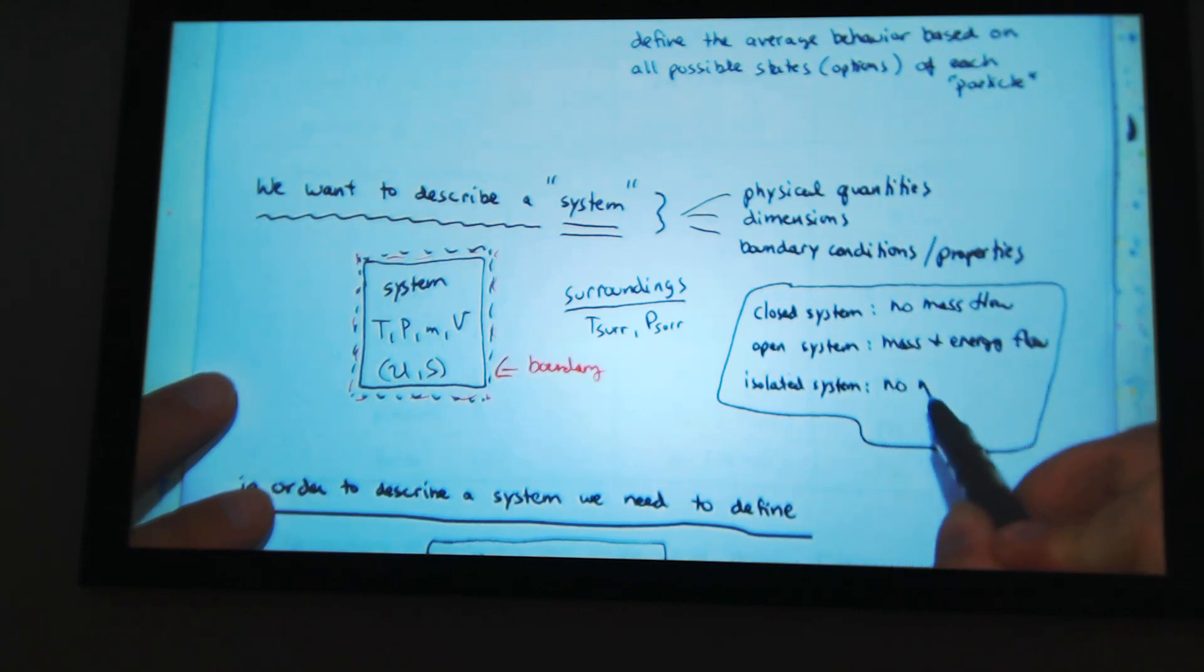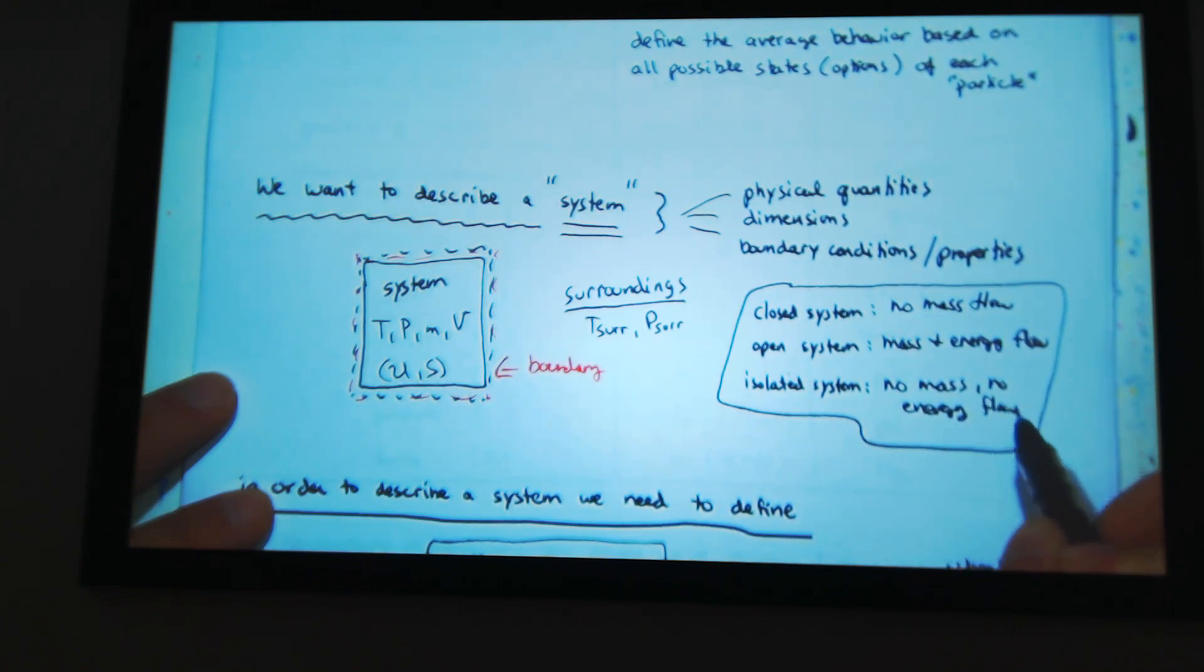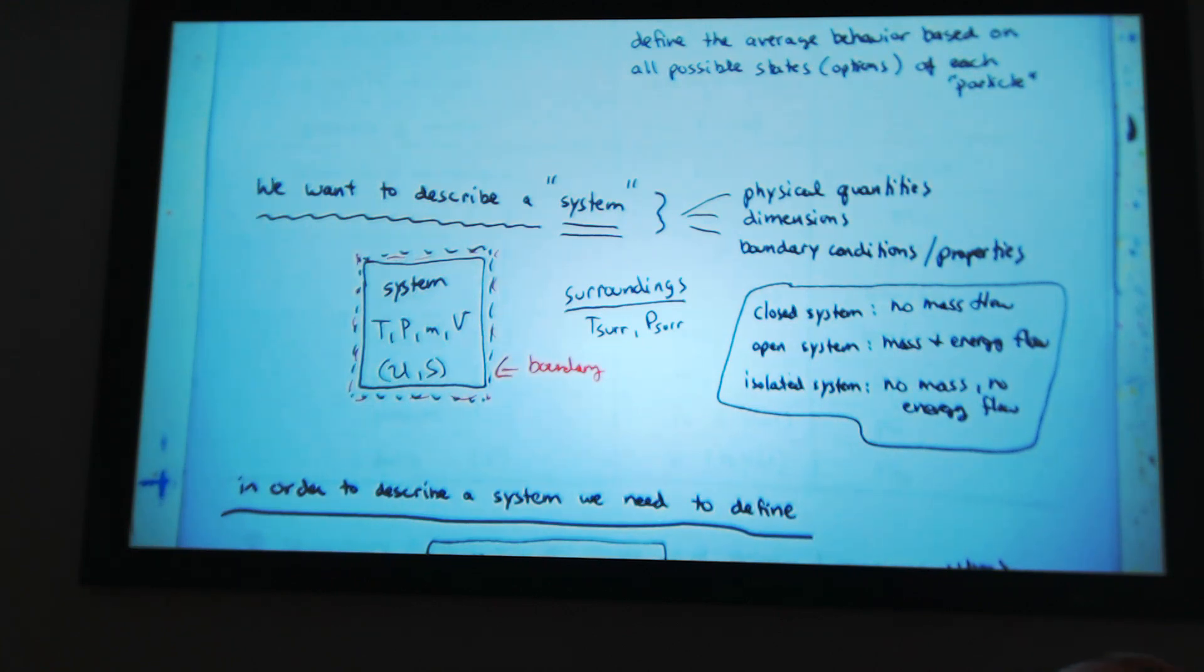Isolated system, no mass, no energy. Isolated system, nothing gets in, nothing gets out. Not even a photon, because a photon has energy. That's why I put energy.